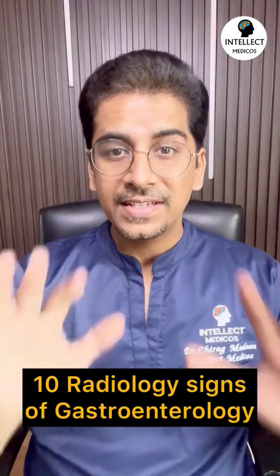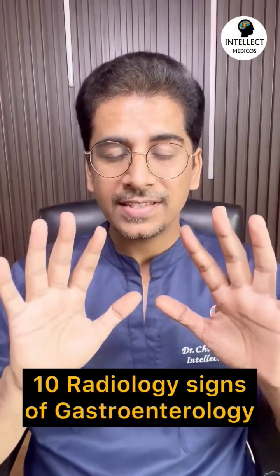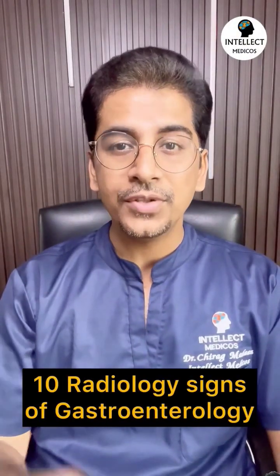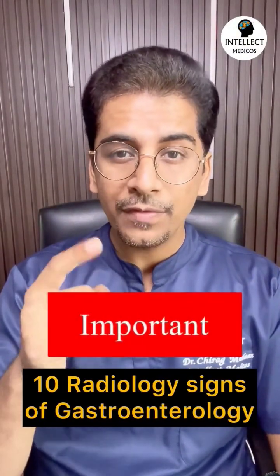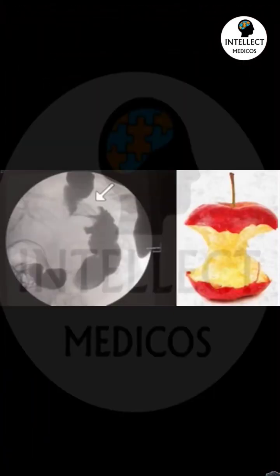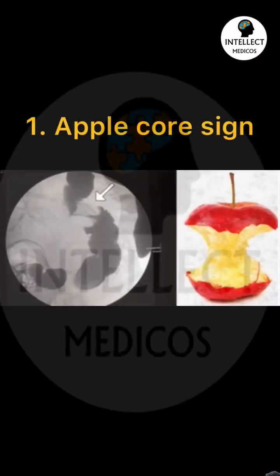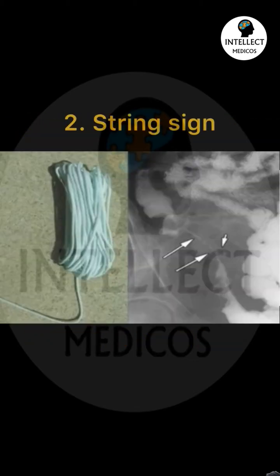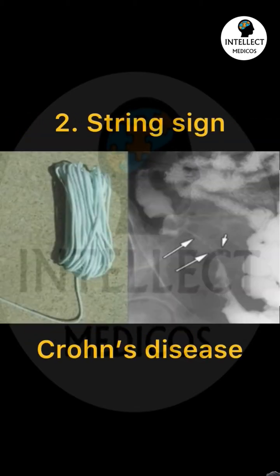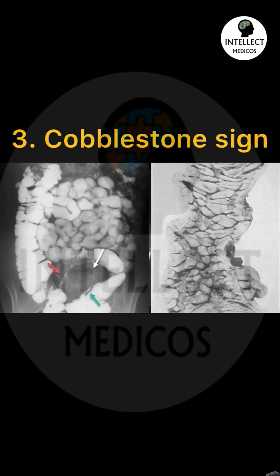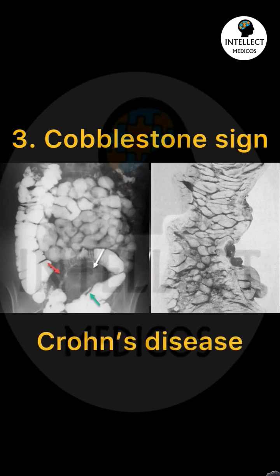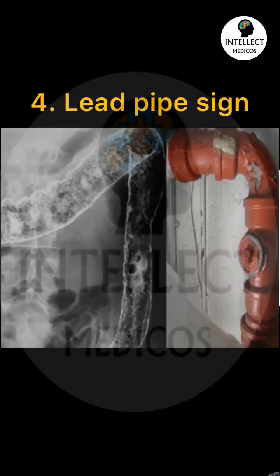10 radiology signs of gastroenterology which you need to know before your exams. First, apple core sign, seen in colon cancer. Second, string sign, seen in Crohn's disease. Third, cobblestone sign, again seen in Crohn's disease.